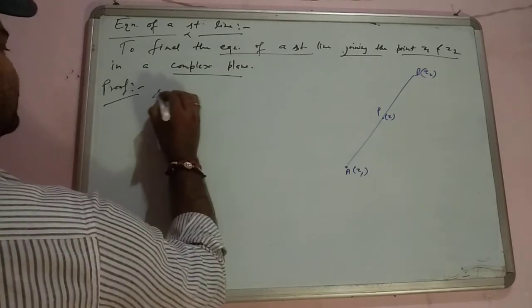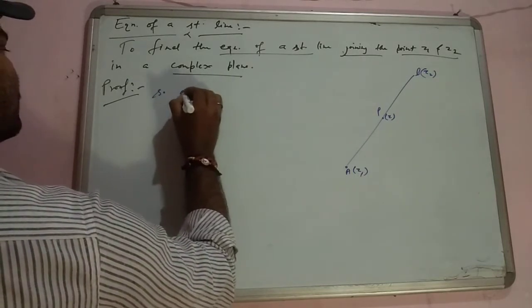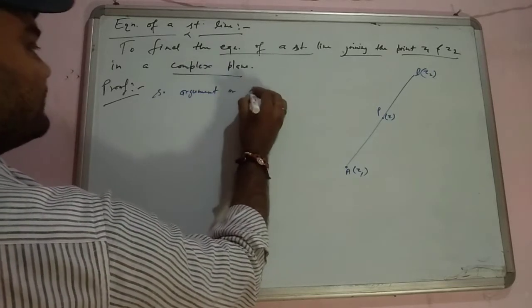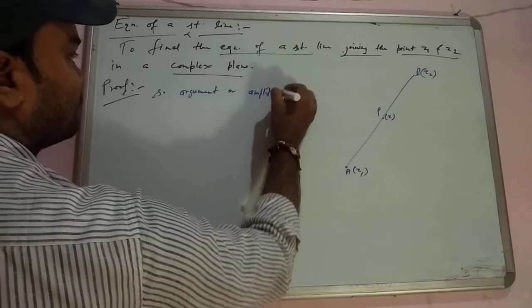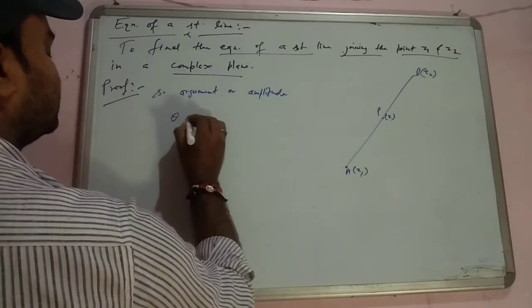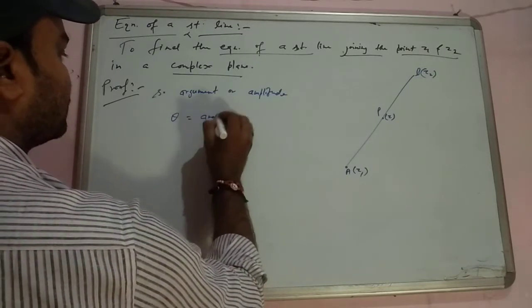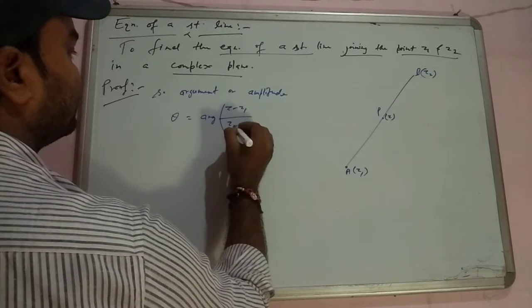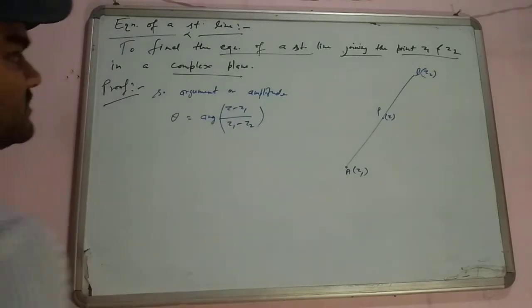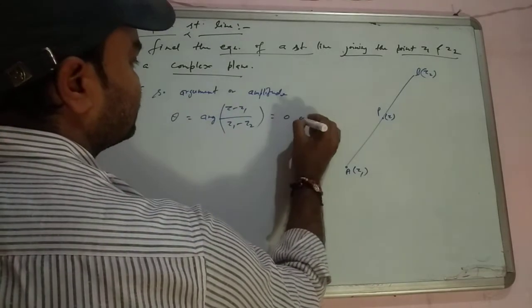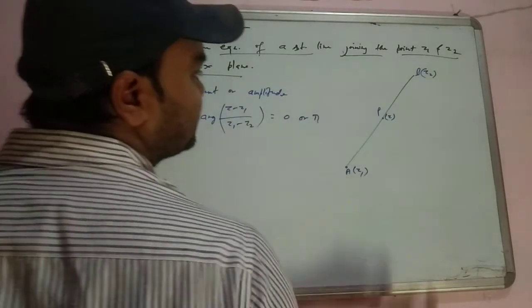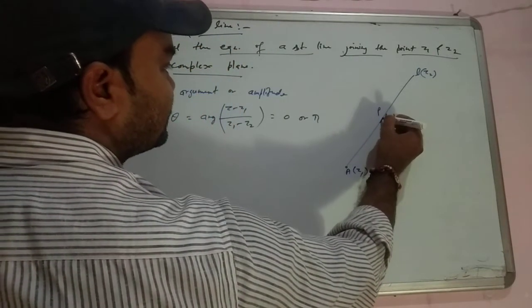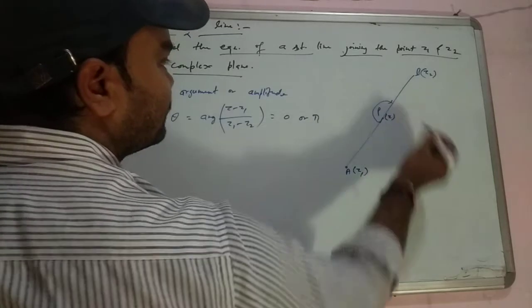So argument or amplitude theta equals z minus z1 upon z1 minus z2 and this equals 0 or pi in this case. Theta is going to be 0 degrees or pi.